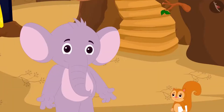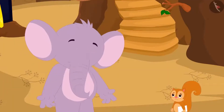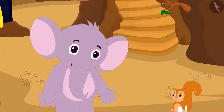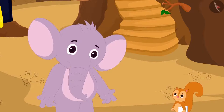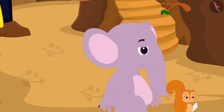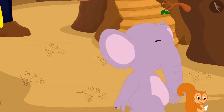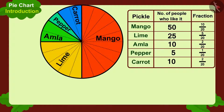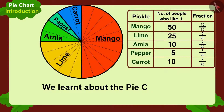Chanda says, 'Let us eat something now, I am very hungry too.' Appu and Chanda then went to eat chapatis. Children, in this video we learned about the pie chart. In the next video, we will learn more about it by some interesting examples.